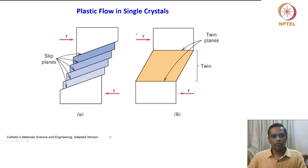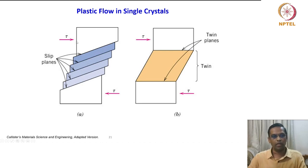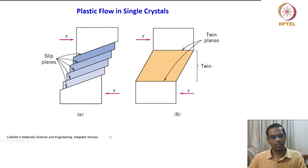If you look at plastic flow in a single crystal, this is how the crystal will slip. We can look at the slip lines — the slip planes will appear against the shear force direction. The slip planes need not be uniform; they could be random.